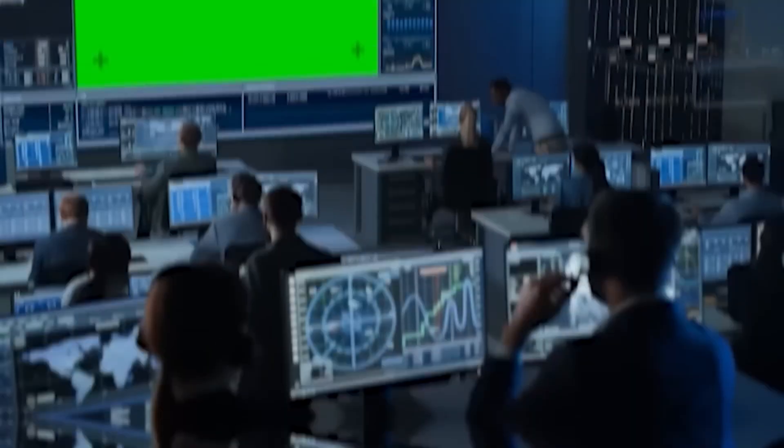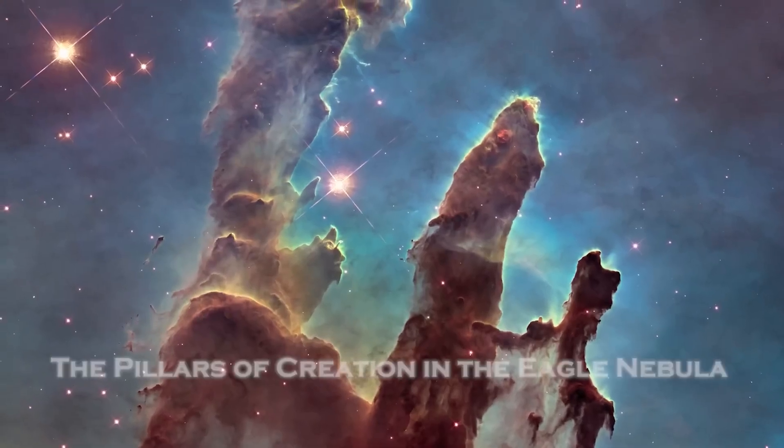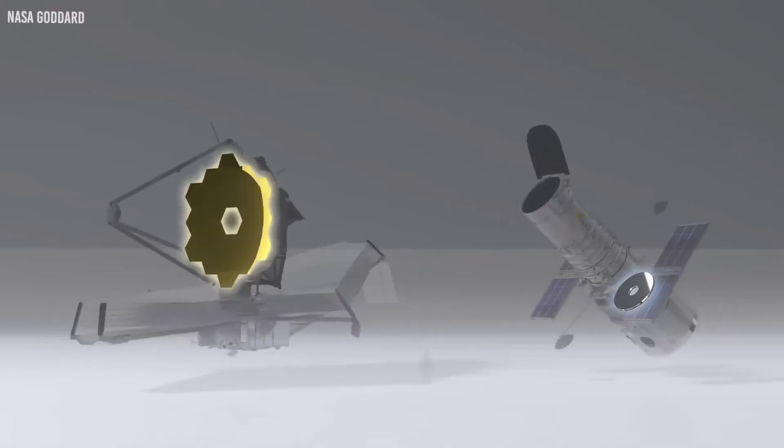Scientists used coronagraphs on telescopes to block light from the central star, along with two of the Webb telescope's cameras, a series of filters and other equipment to observe it.